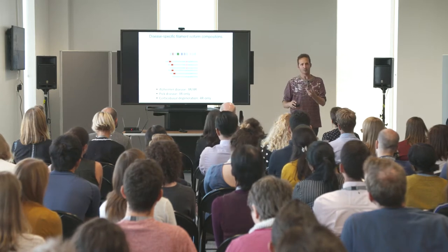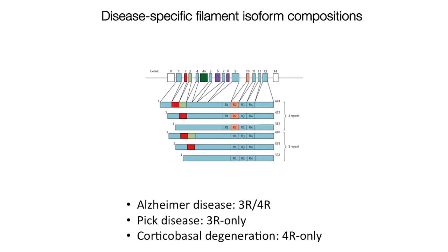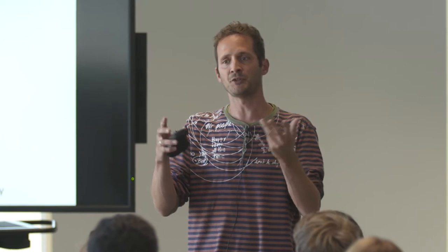In human brain there are six isoforms of tau, and the full-length tau protein is 441 residues. That contains four microtubule binding repeats, R1 to R4. Tau uses these repeats to bind to microtubules.